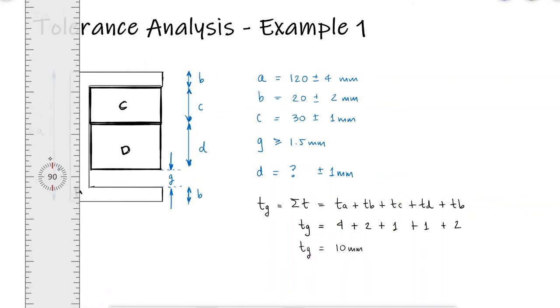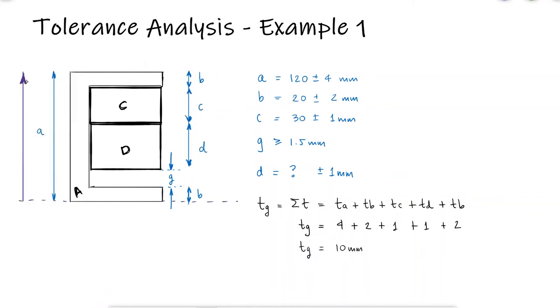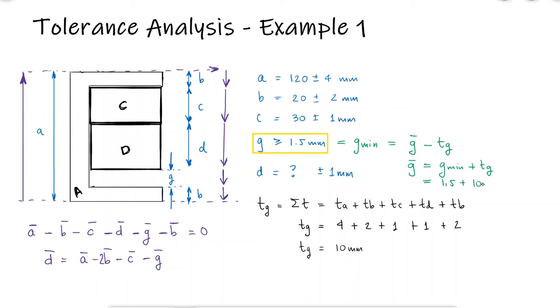This is important because we know that the nominal value for dimension D can be calculated if we have the nominal values for every other dimension. This means that we need the nominal value for the clearance G. Since the minimum value of G is equal to its nominal value minus its tolerance, the nominal value is the minimum value plus the tolerance.